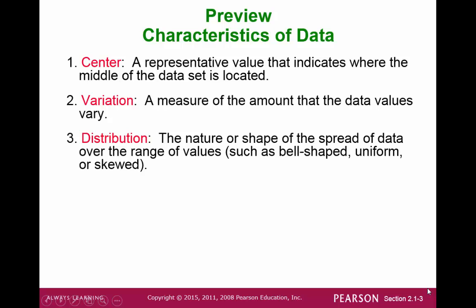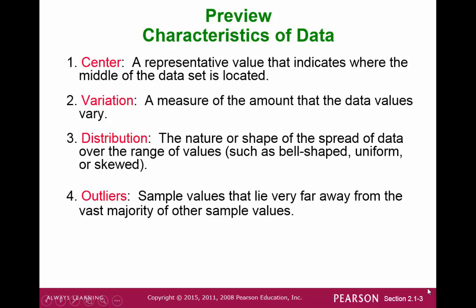Distribution describes the shape of your data set. Outliers are values that may lie far away from the majority of your data. And then time might be considered if your data seems to be changing over time.